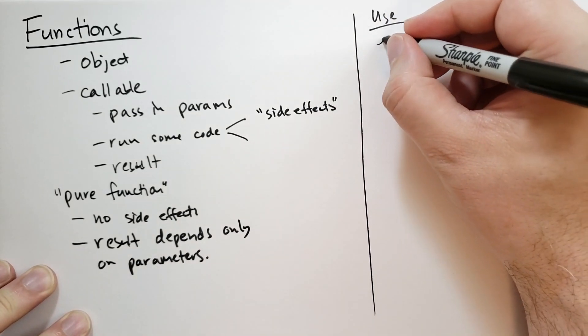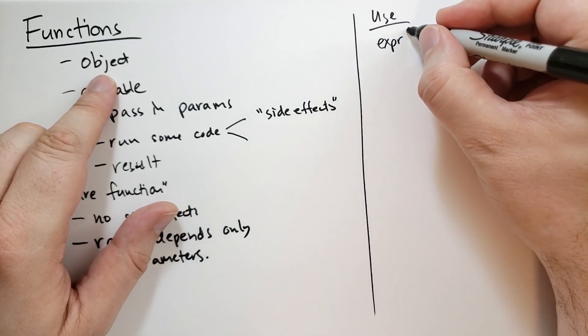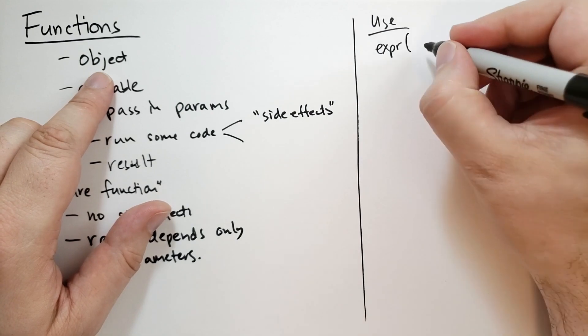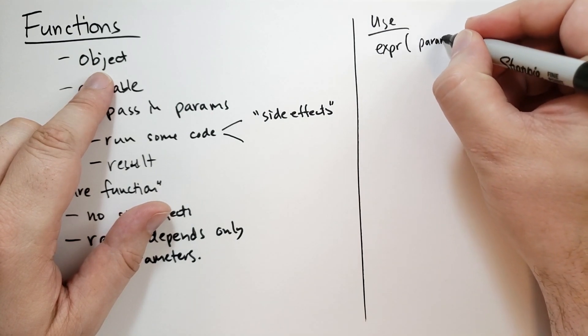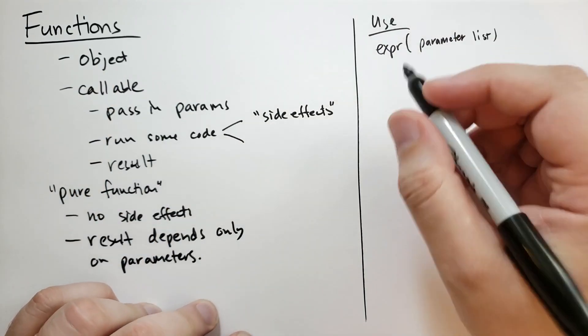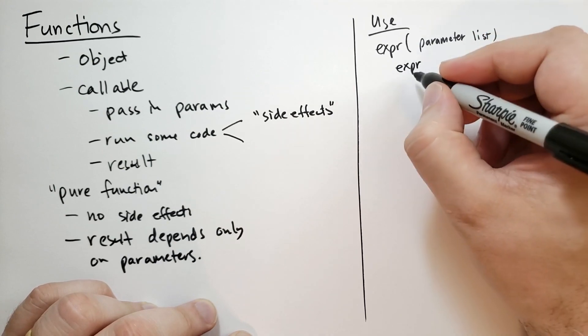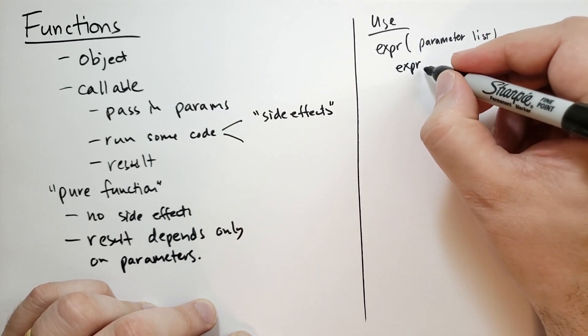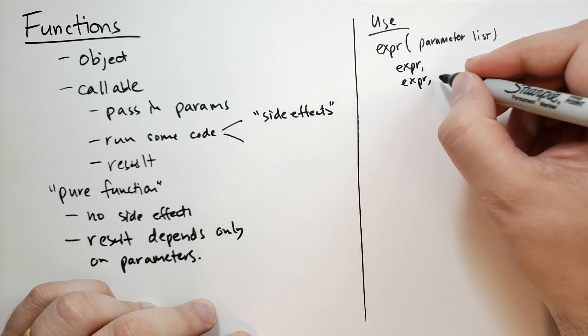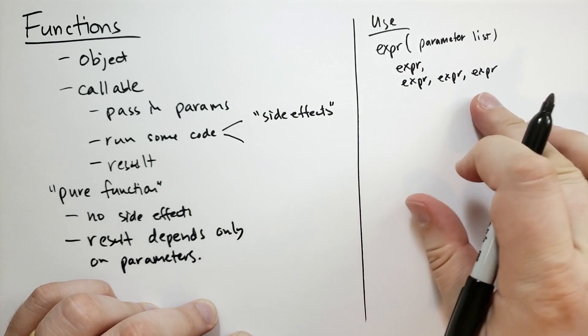Well, we have some expression that evaluates to a function. Then directly after that, we have a parenthesis. And then inside of here, we're going to pass a parameter list. And that parameter list is basically just a list of expressions. It can be one expression or no expressions. You can have a comma at the end. You can have, if you have multiple expressions, they're separated by commas. So this is a value of a lot as well.